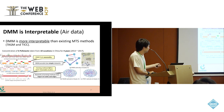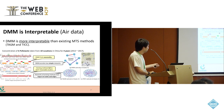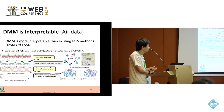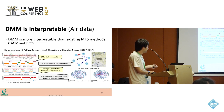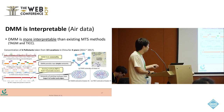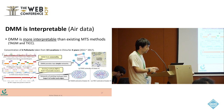These are the networks obtained by DMM and the baselines. DMM provides two simple networks which contribute to our understanding of the data. On the other hand, existing methods find networks with a large number of nodes and edges, which hampers understanding.